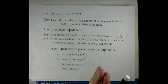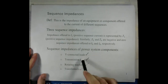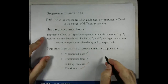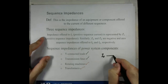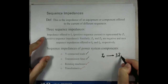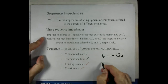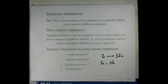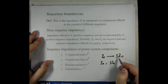These were a couple of observations from our discussion of sequence impedances of various power system components. We also observed that the impedance offered to the zero sequence current is 3ZN, where ZN is the impedance to the ground.